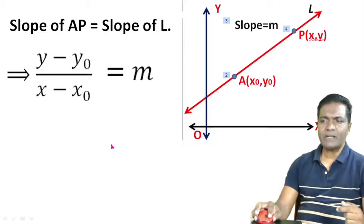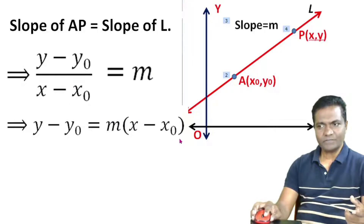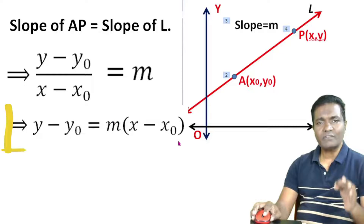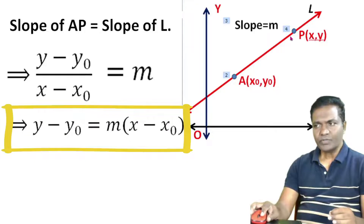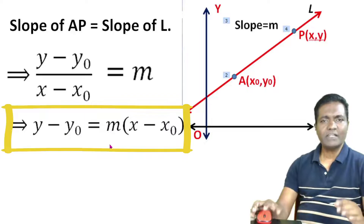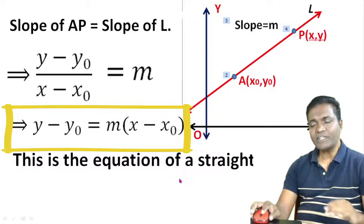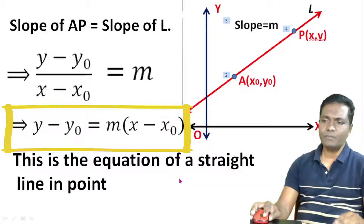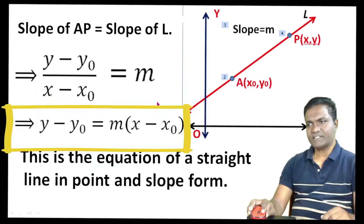If we cross multiply, we get Y minus Y naught equal to M into X minus X naught. So this is the equation of a straight line passing through a point (x₀, y₀) and having slope m.